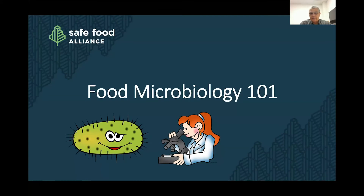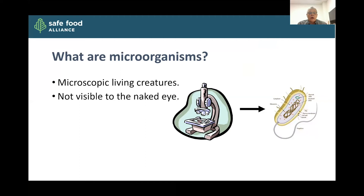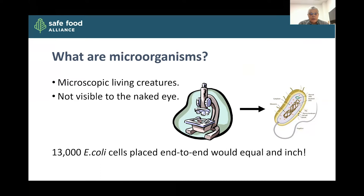So why are we here today? What are microorganisms? They're basically microscopic living creatures. They're not visible to the naked eye — by definition, we can't see them just looking around in the world around us. They're incredibly tiny. 13,000 E. coli cells placed end to end would equal about an inch. It's like looking down at the earth from outer space and hoping to see humans on the surface — we just can't see them with our eyes. That's why we have to use other tools and techniques to keep those organisms in control and know what's going on.